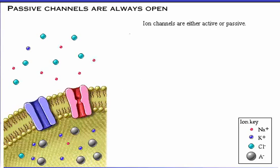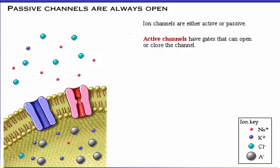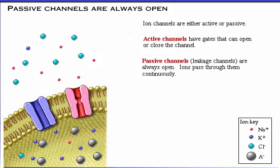Ion channels are either active or passive. Active channels have gates that can open or close the channel. Passive channels, also called leakage channels, are always open and ions pass through them continuously. We see passive channels here, and we will look at active channels on the next two pages.